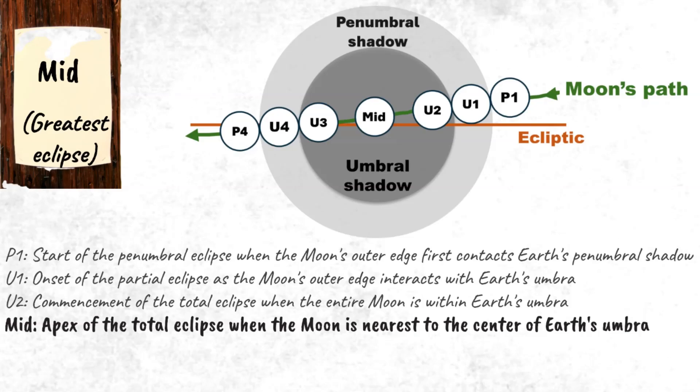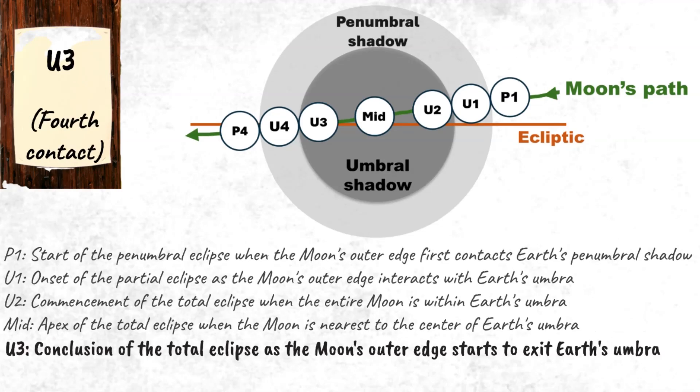During the total eclipse, the Moon appears reddish due to the bending of some sunlight toward the Moon by Earth's atmosphere. Contact point U3, or the fourth contact, marks the conclusion of the total eclipse as the Moon's outer edge starts to exit Earth's umbra.